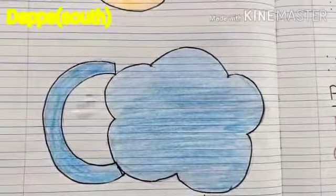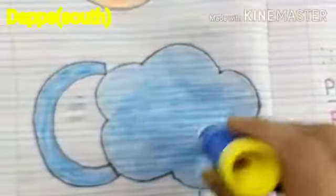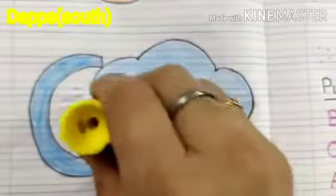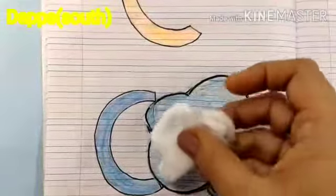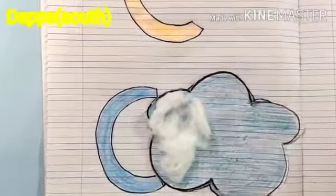So children, you have to ask your mom for a glue stick or glue. Okay children, after putting glue, you have to paste cotton on the cloud.